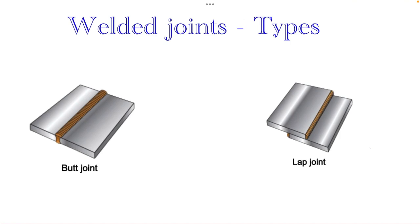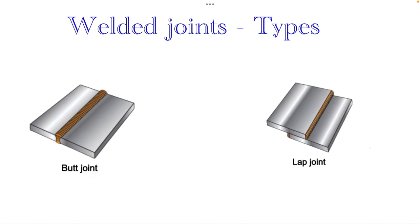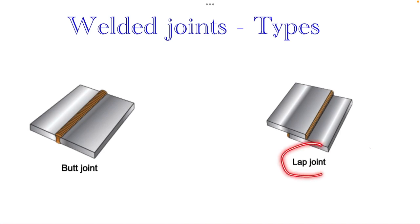Let me introduce the types of weld joints. In this figure you can see two types: one is known as butt joint and the other is lap joint. Here, two plates are being joined so that even if you apply force they may not separate, because of the welded connection. In a butt joint, the plates are butting each other or are at the same level, and the weld is applied along that line. In a lap joint, the plates are overlapping each other.